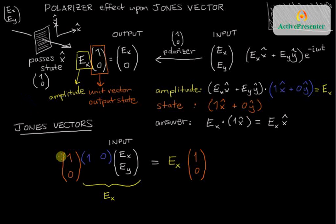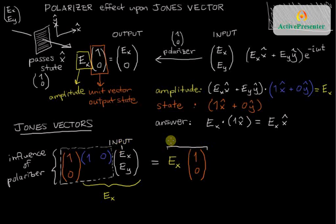Now, importantly, these two, I will put a dashed box around these two elements. These two things are what the influence of the polarizer. Right, I've got this as the input. This here is the output.